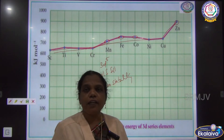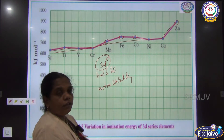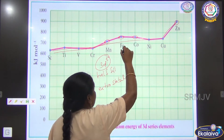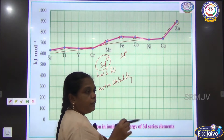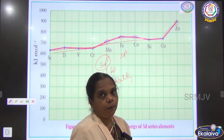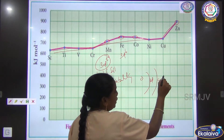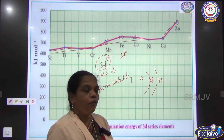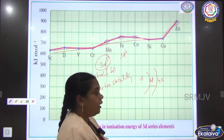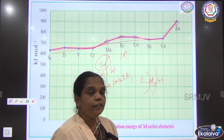Due to the half-filled configuration, there is extra stability of the electrons present in the 3D orbital. So the ionization energy is higher for manganese — we cannot easily remove the electron. After manganese, from iron onwards with 3D6, the number of paired electrons increases, meaning the number of D electrons increases. These D electrons shield the 4S electron, reducing the attraction of the 4S electron towards the nucleus, so the ionization energy decreases slightly before rising again.